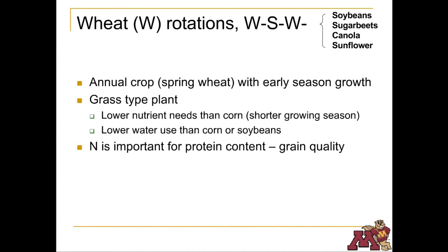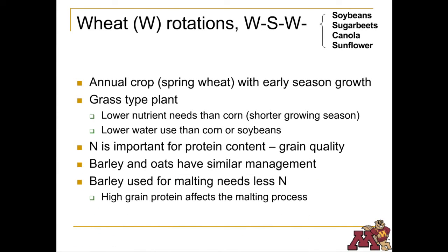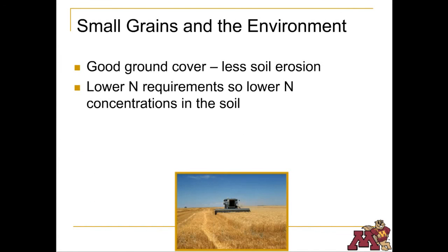Wheat and its genetic neighbors, barley and oats, are often grown in a rotation with soybeans, sugar beets, canola, or sunflowers. Small grains will create better ground cover than corn or soybeans, which helps reduce the risk of soil erosion. Because grains need less nitrogen, the potential to pollute groundwater is less as well.